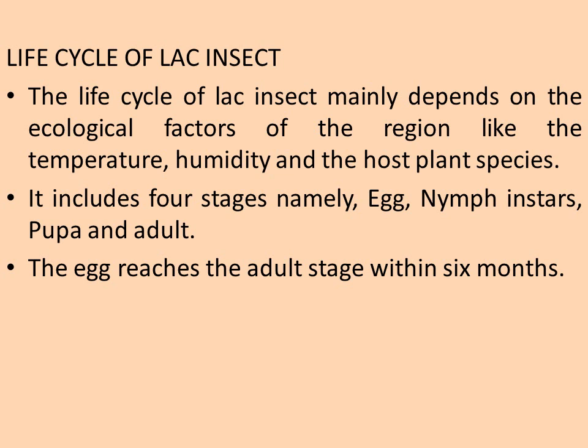The life cycle of the lac insect mainly depends on ecological factors of the region, such as temperature, humidity, and the host plant species. It includes four stages: egg, nymph, pupa, and adult. The egg reaches the adult stage within six months, and during this time the lac secretion is harvested from the insect.